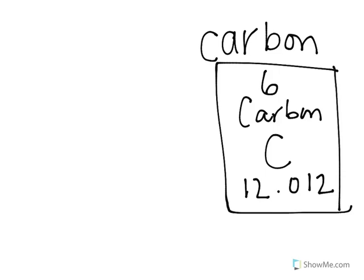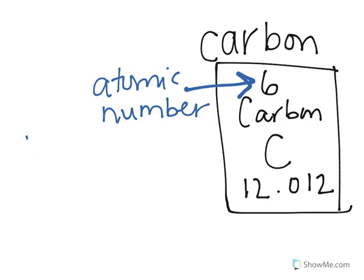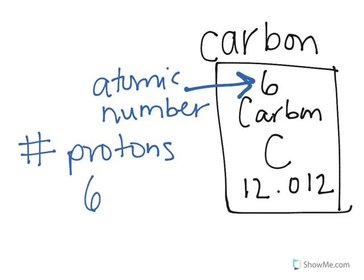So if we were looking on a periodic table, this is what we would see for carbon. Let's dissect what these different numbers mean. The top number — six, in the case of carbon — is called the atomic number. This number represents the number of protons for this element, so carbon has six protons in its nucleus. The name and symbol are also shown — each element has a one or two letter symbol, and when we draw chemical structures, we usually use that symbol rather than writing out the full word.